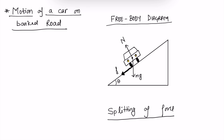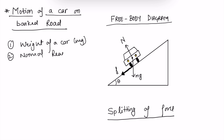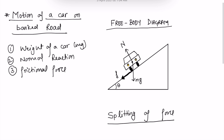Let's see the free body diagram. If my car is having a circular motion on a banked road which is inclined at an angle of theta with the horizontal, then students there are three forces: the weight of the car, mg, and the second one is normal reaction, and the third one is the frictional force, which is the centripetal force responsible for the circular motion.